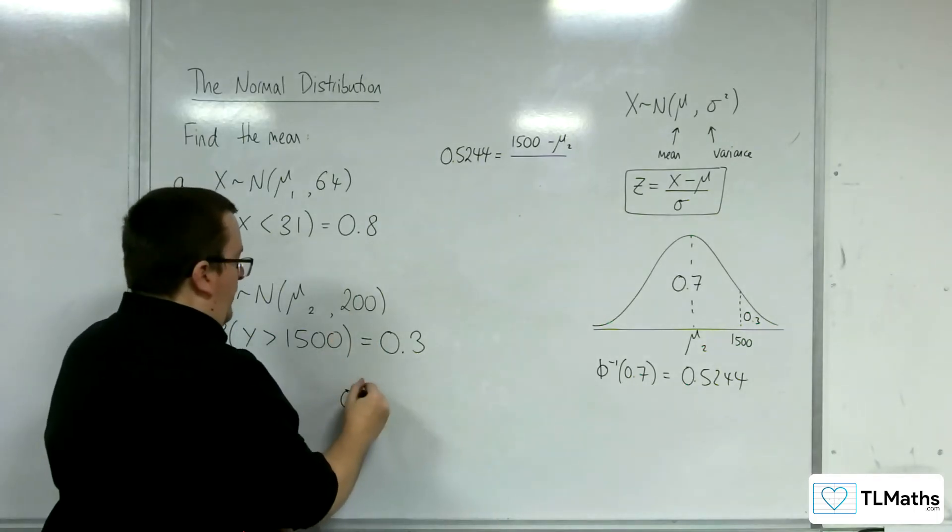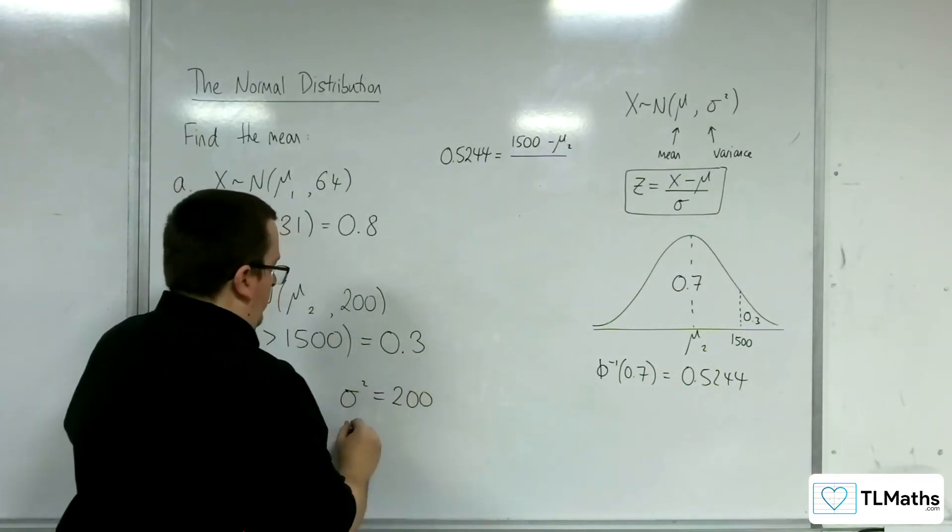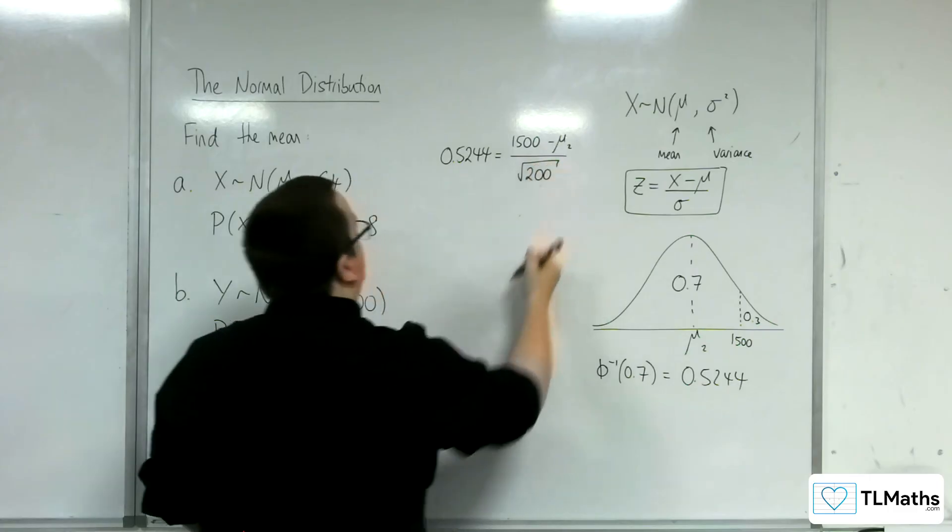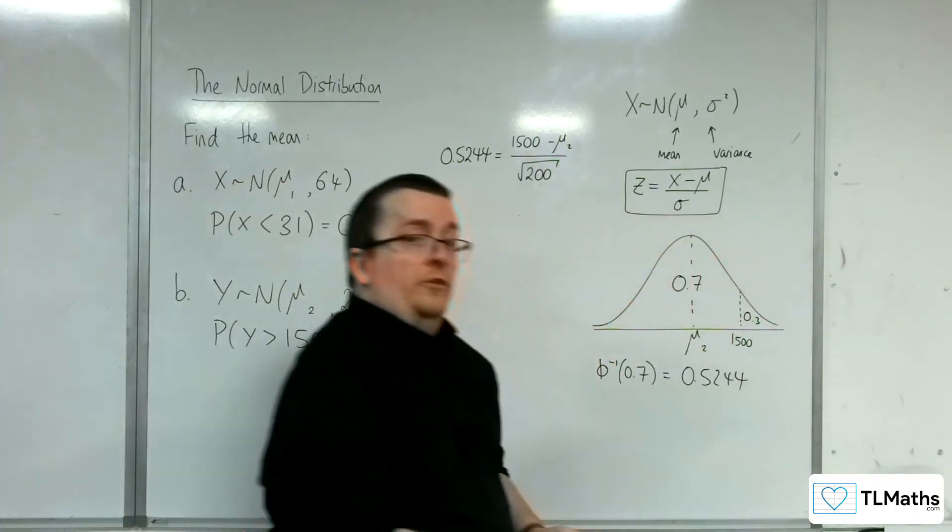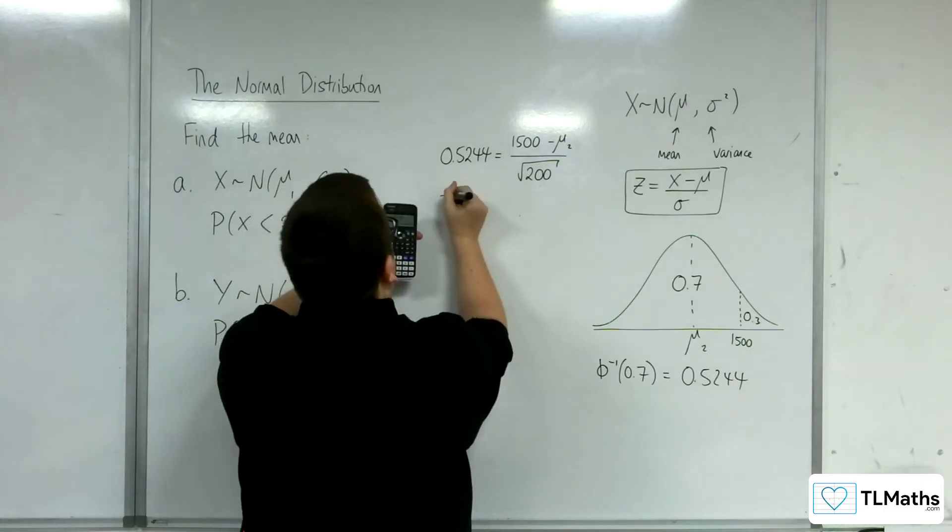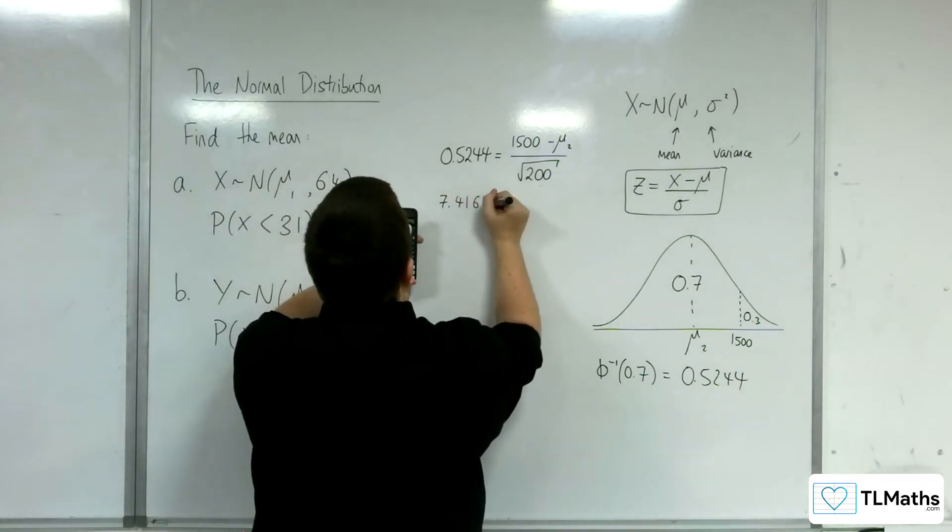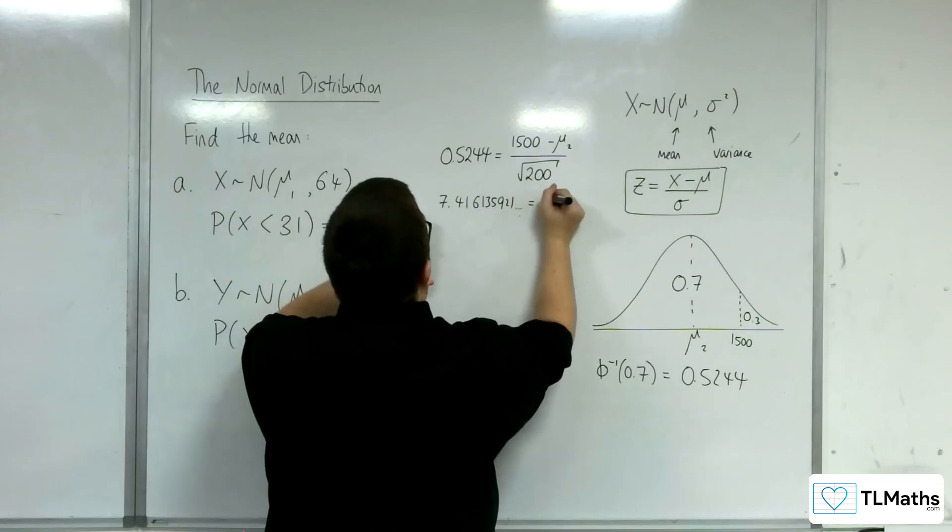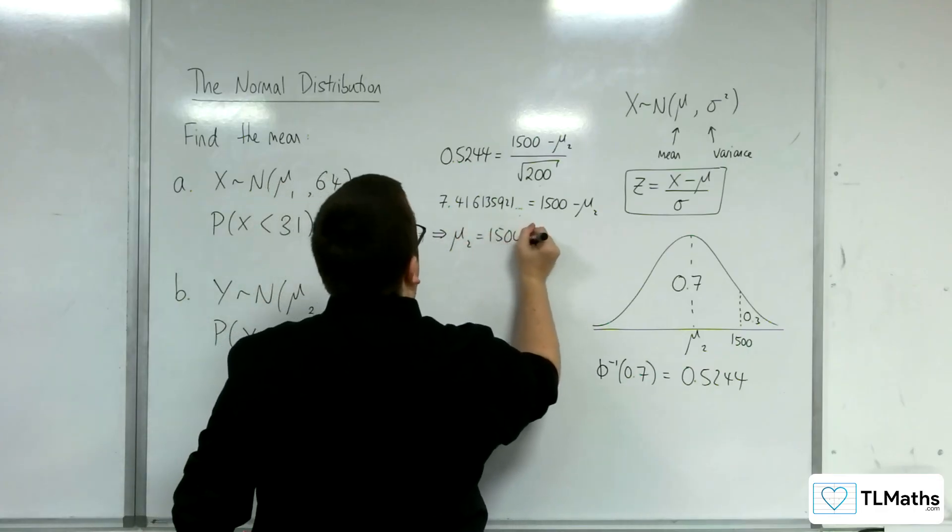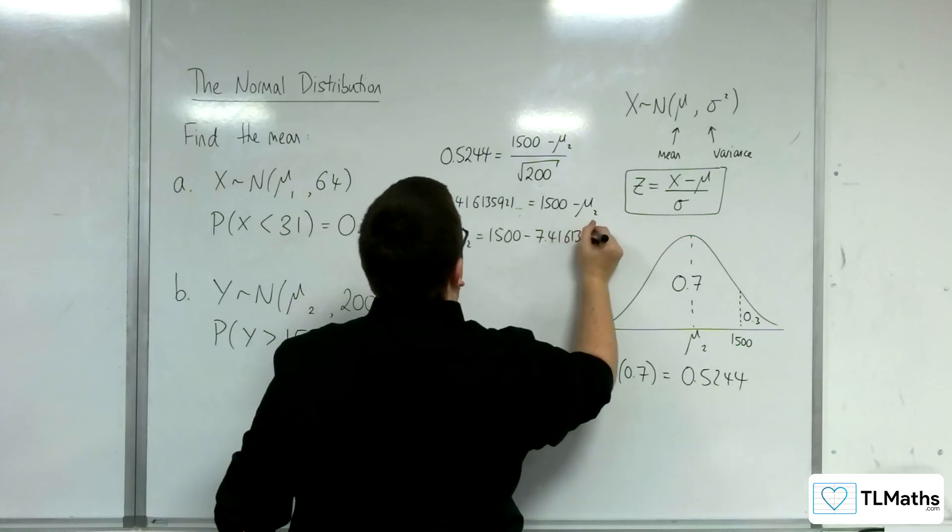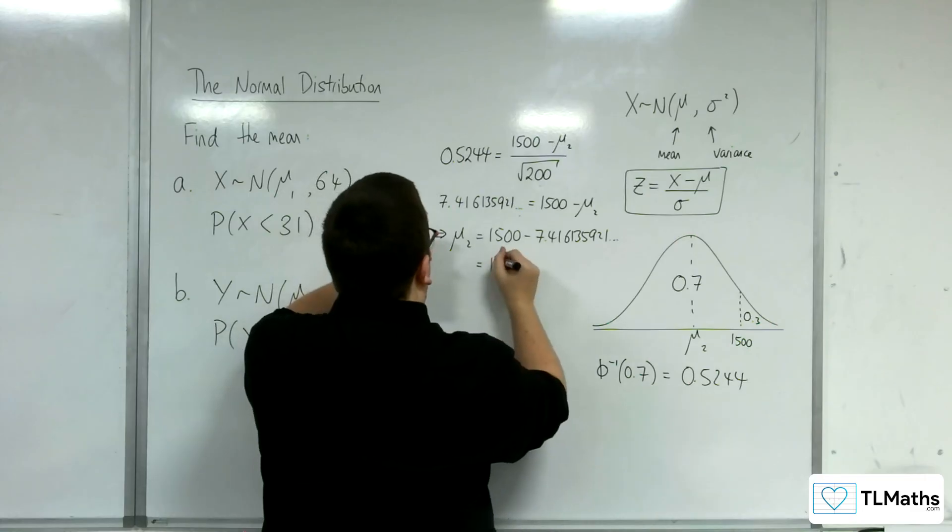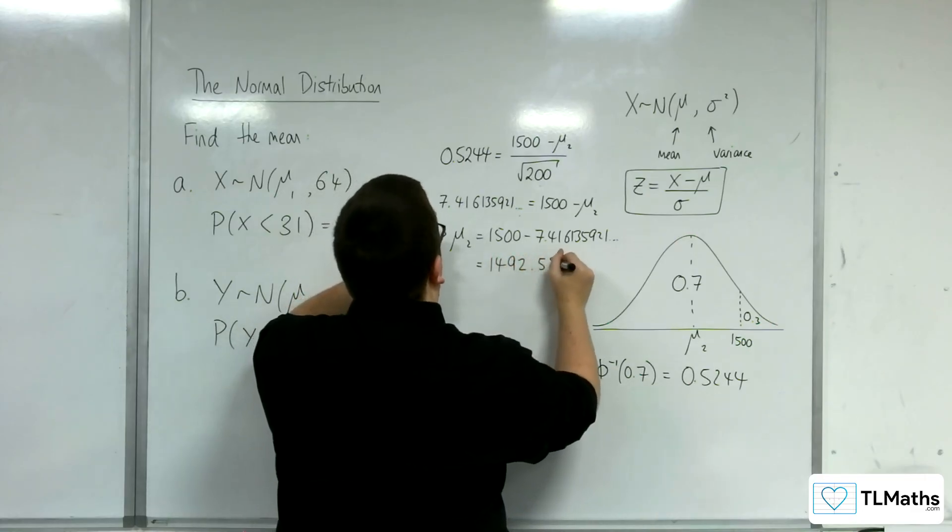Now this, remember, is σ squared. So σ squared is 200. So σ is the square root of 200. So we're going to need to multiply 0.5244 by the square root of 200. So 7.416135921 is equal to 1500 take away μ₂. So μ₂ must be 1500 take away 7.416135921. So 1,492.583864.